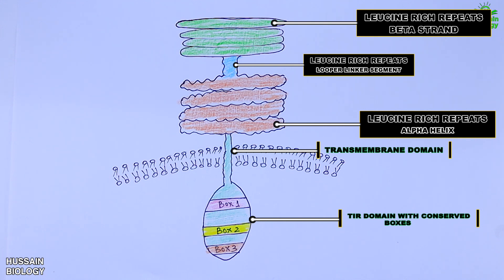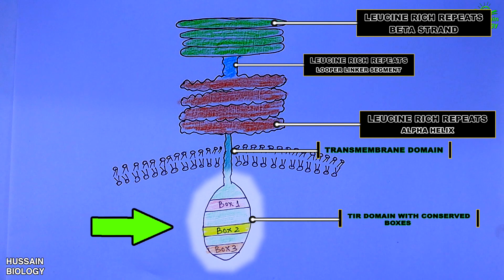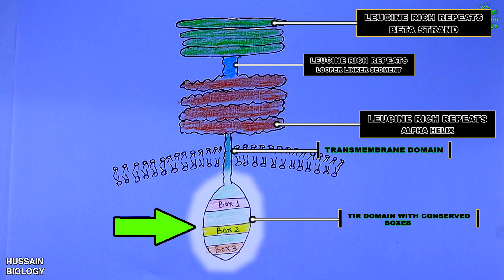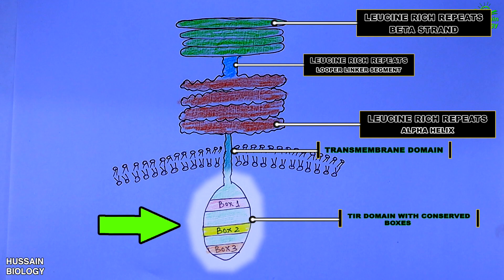This TIR domain is divided into three conserved boxes — 1, 2, and 3 — that vary in size and are critical signaling portions of the molecule. Their side chains are used for interaction with downstream signal adapter molecules.